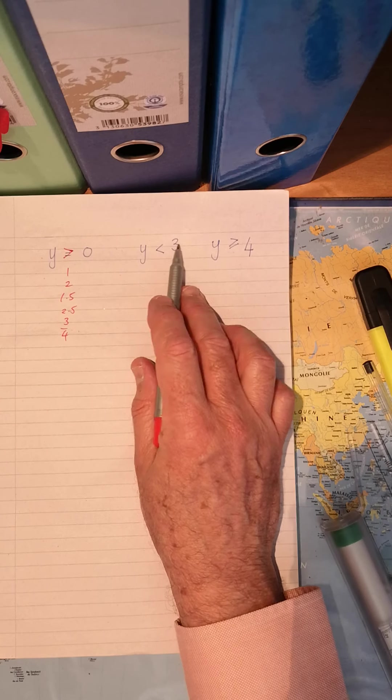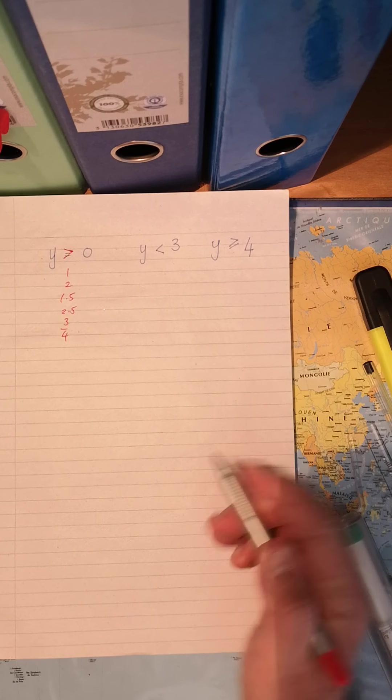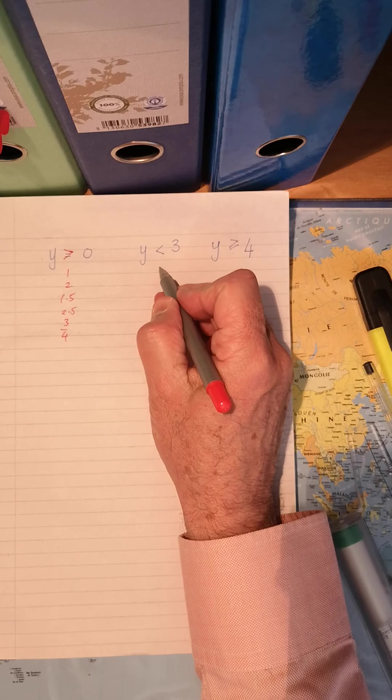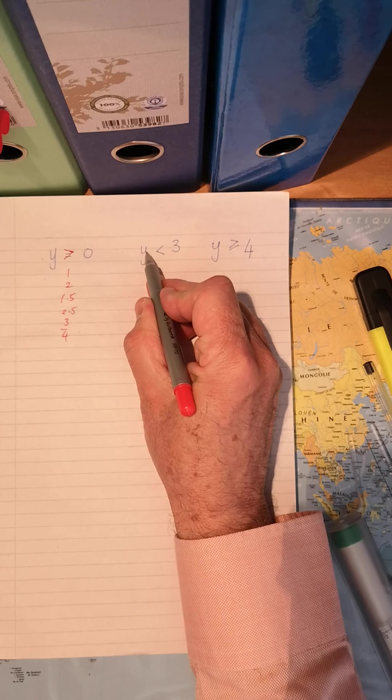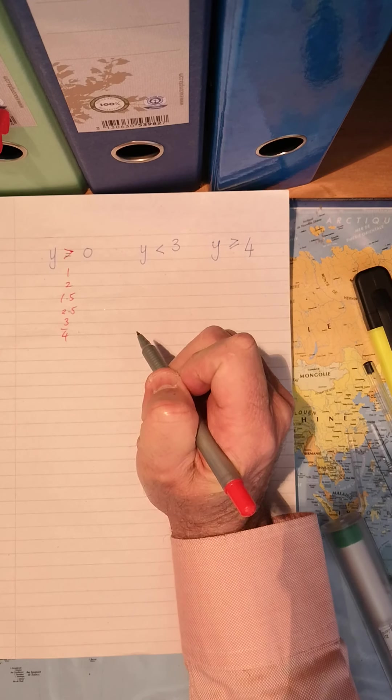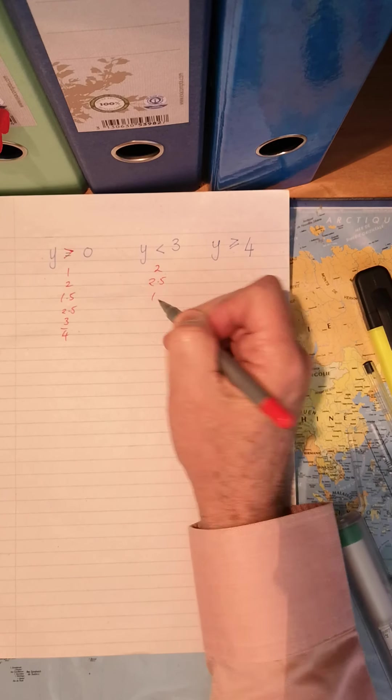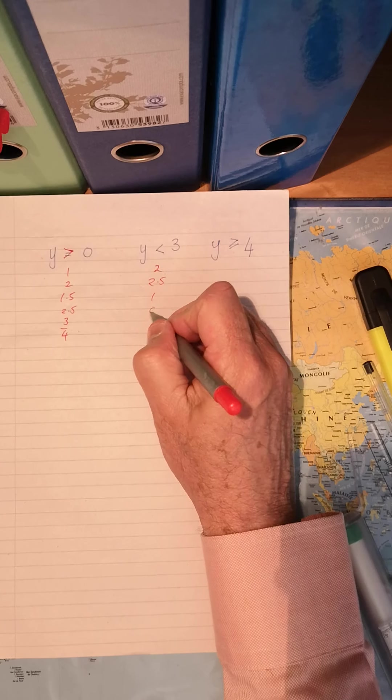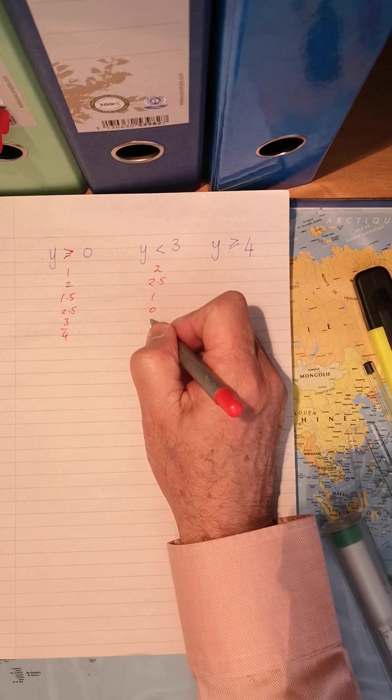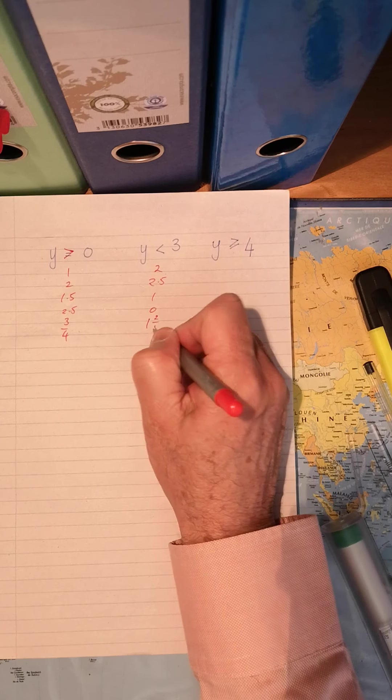So Y is smaller than three. What numbers could we use there? Could we start with three? Again, no. Because Y is smaller than three. So let's see. Two would be the obvious one. 2.5. We could have one is smaller than three. Naught is smaller than three. 1.25 is smaller.